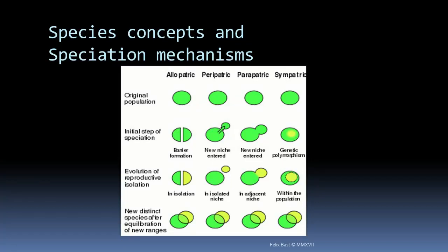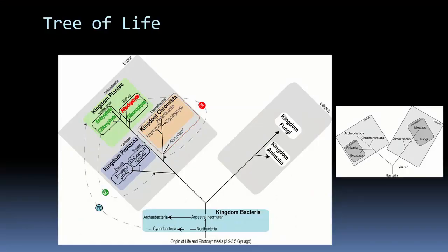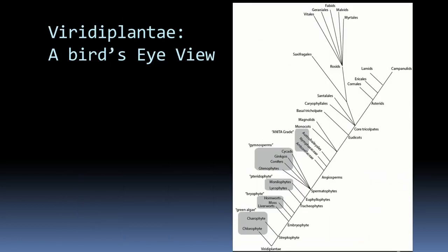So, the first thing is we will explain different species concepts and speciation mechanisms. Then we will see the Tree of Life — the holistic picture of the entire biodiversity of planet Earth. Then we will zoom into Viridiplantae — the bird's eye view of how different groups, for example, green algae, bryophytes, pteridophytes, gymnosperms, angiosperms, monocots, and dicots, are related. We will be emphasizing on that interrelatedness rather than a detailed look at each subtaxa — we will give you an overview.